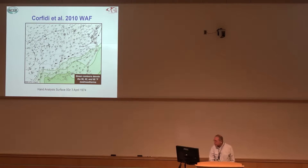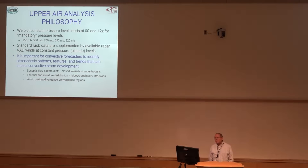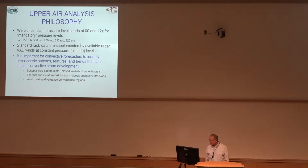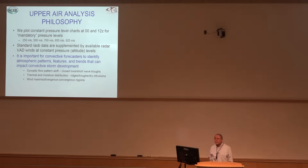So we plot constant pressure level charts twice a day at the mandatory levels, and we've supplemented the radiosonde data with VAD winds. The goal is to identify patterns, features, and trends that can impact storm development — what's the flow aloft, are there features generating upward vertical motion, what's the thermal and moisture distribution, and where are the wind maxima in terms of jet streams? That lets us identify upper-level divergence and lower-level convergence regions, apply the continuity equation, and see where there might be pronounced areas of upward motion.